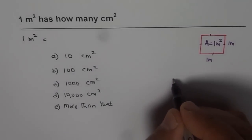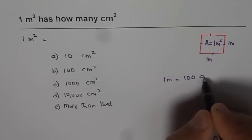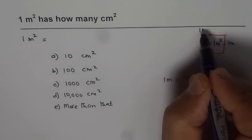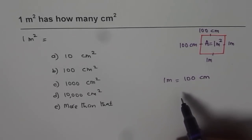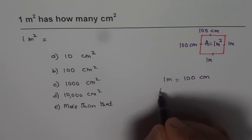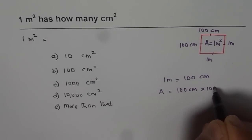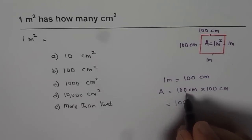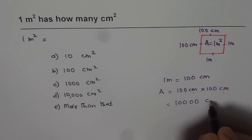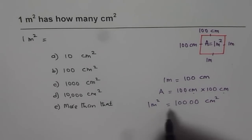Now, we know how much 1 meter equals in centimeters: 1 meter is 100 centimeters. So I can write 1 meter as 100 centimeters. If 100 centimeters is the width and 100 centimeters is the length, then what is the area? Area should be 100 centimeters times 100 centimeters. That gives me a number with 4 zeros — 10,000 — and the units are centimeters square.